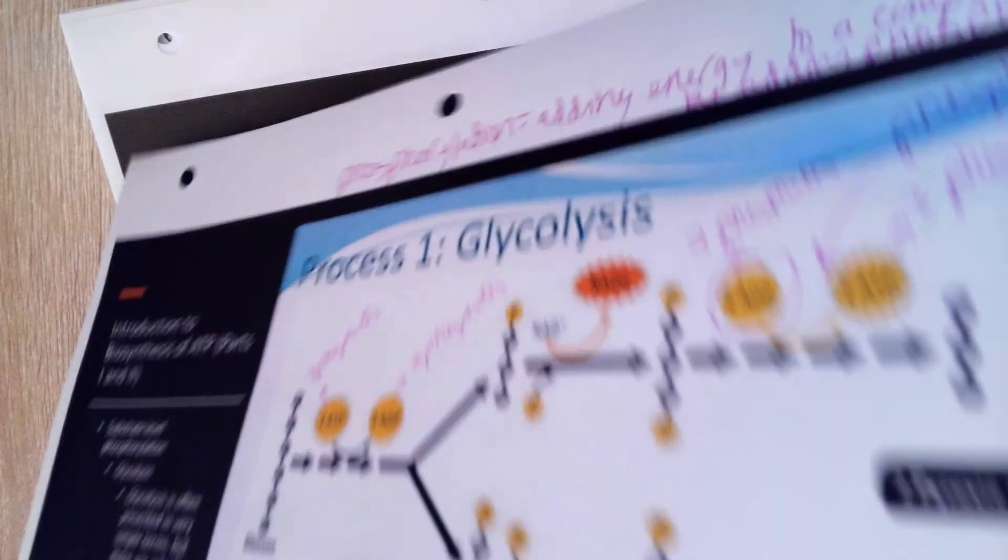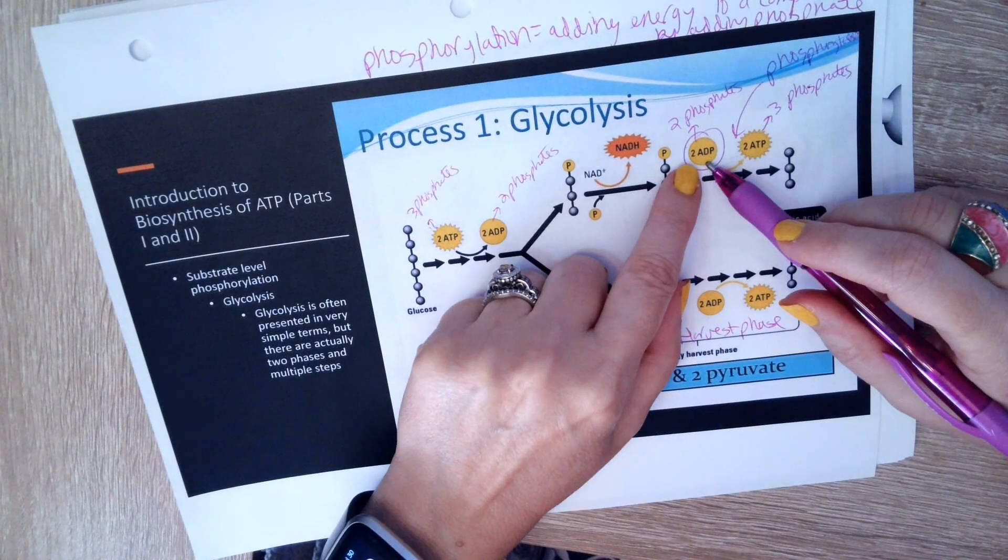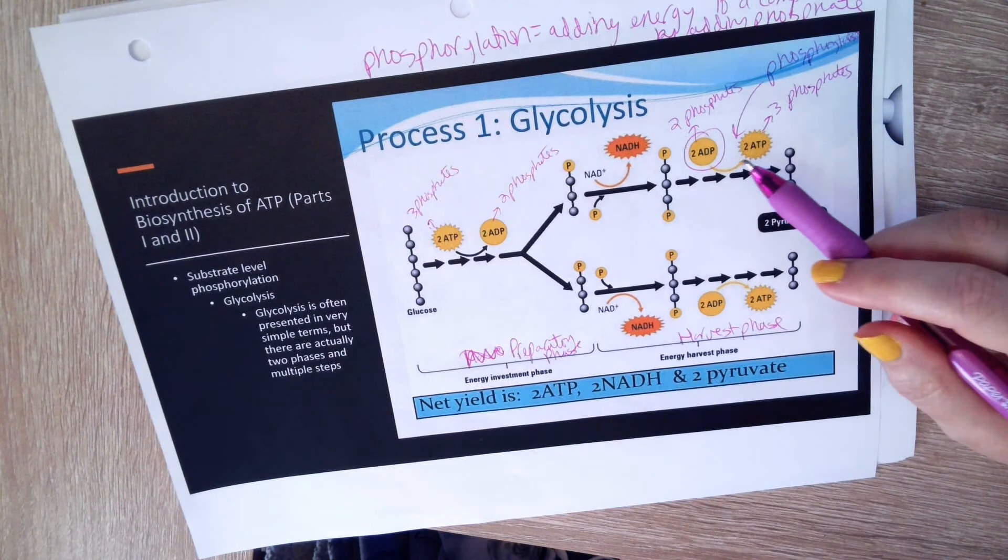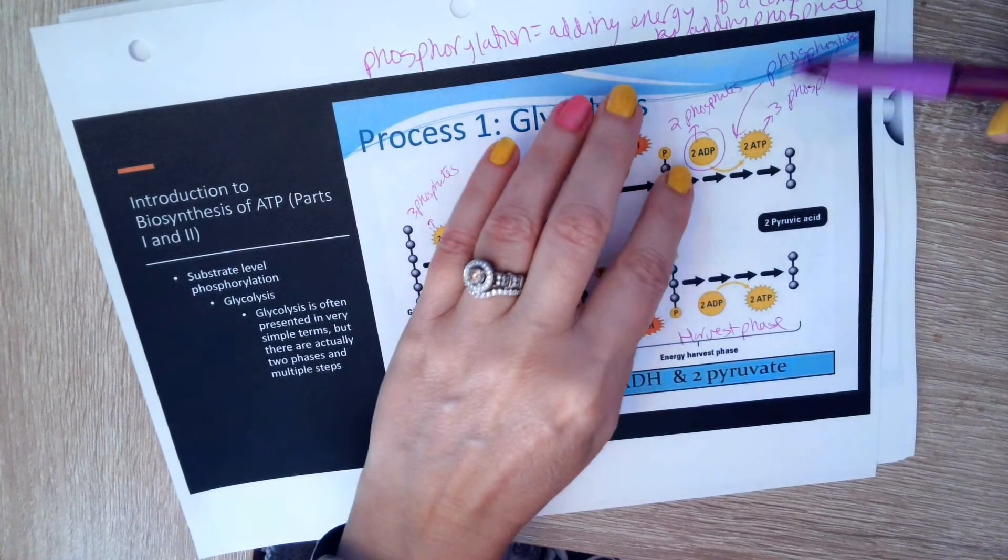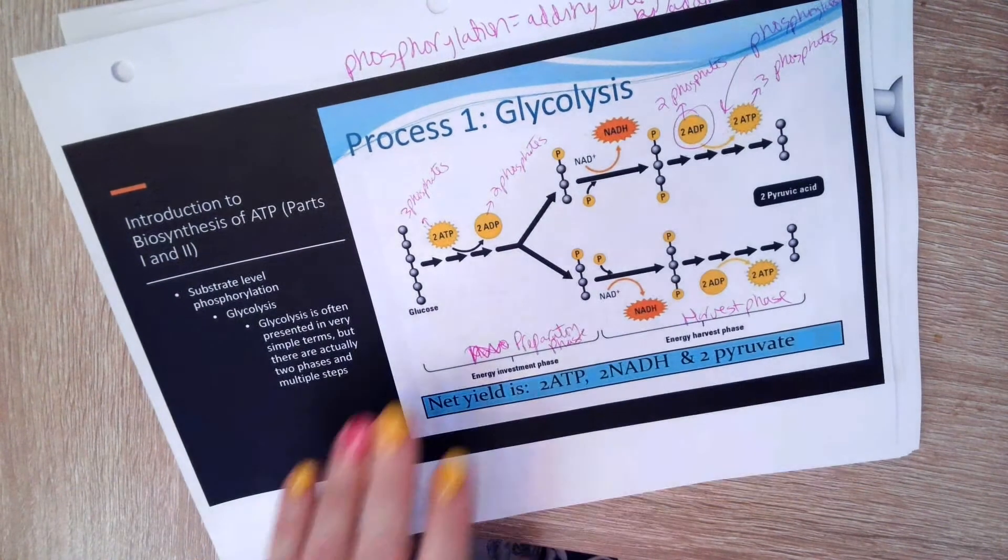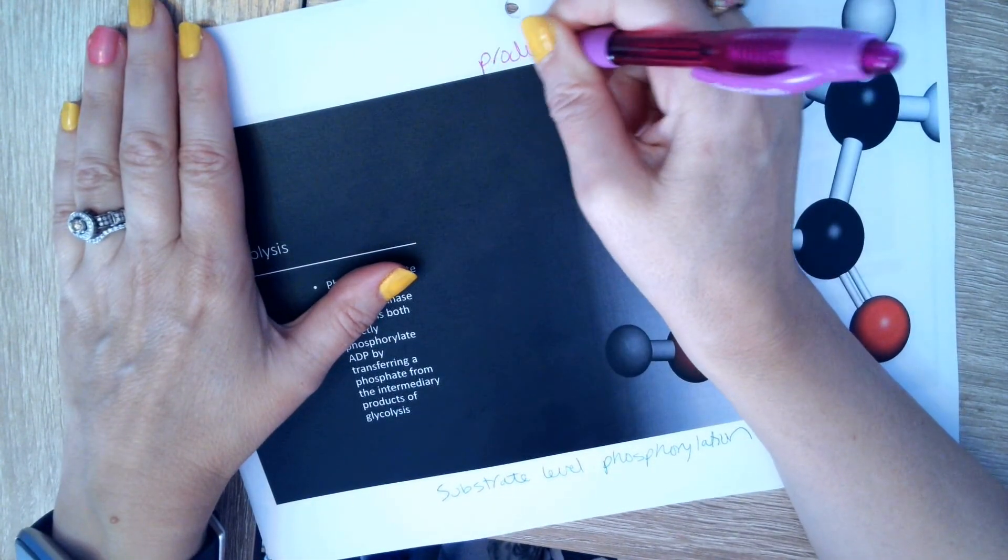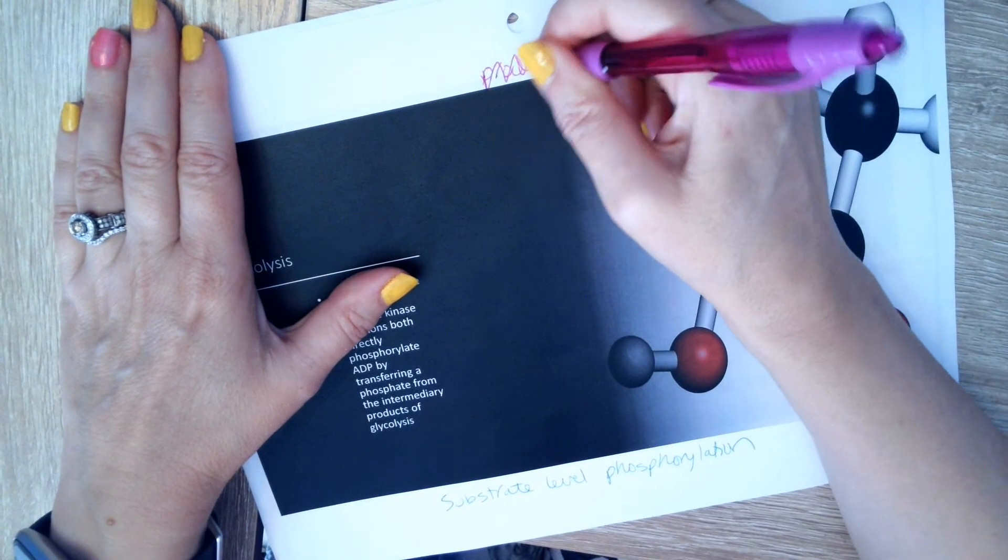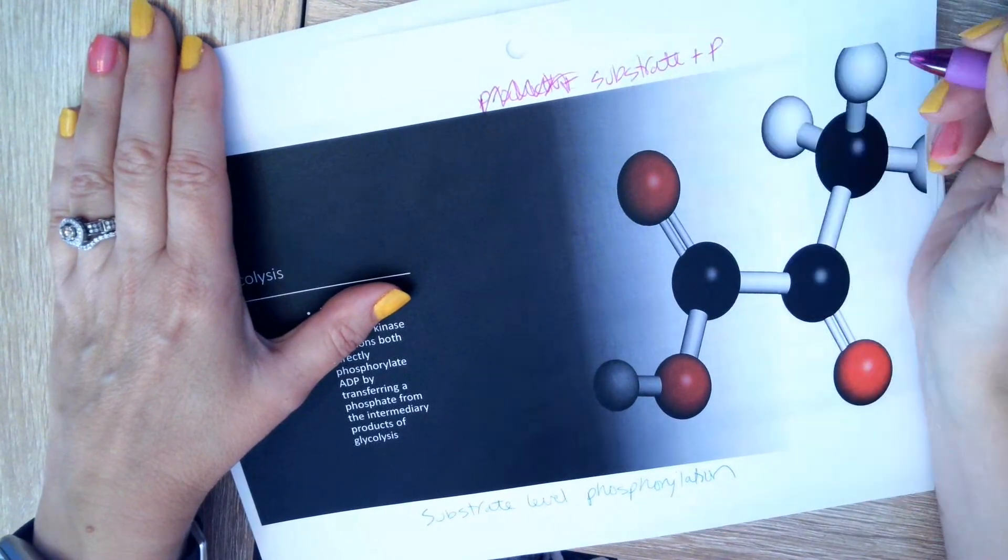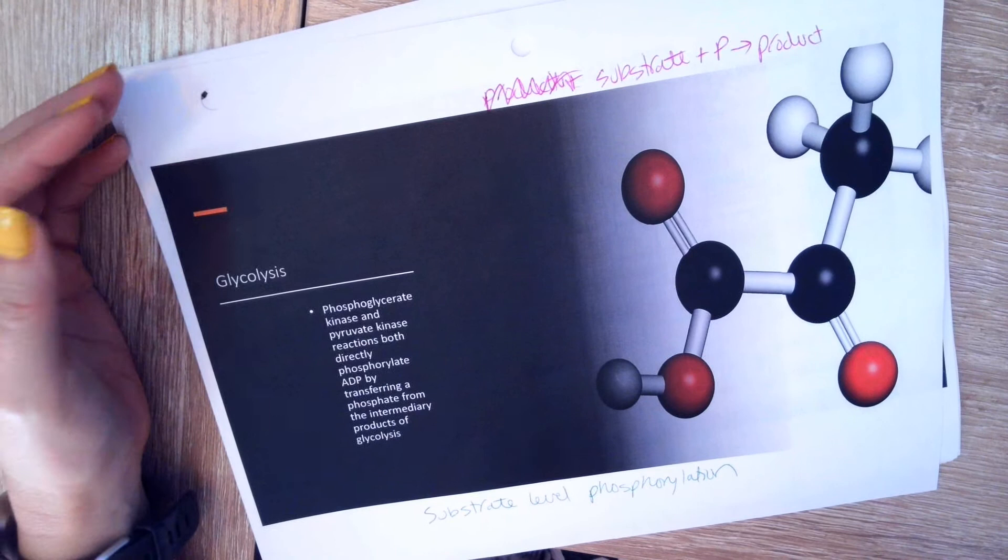So what we're seeing here is the phosphorylation happening directly to the ADP. We're not really doing a big chemical reaction like an oxidation-reduction reaction here, which we're going to talk about oxidation reactions in a few minutes, but we're just literally adding a phosphate to the ADP so that we can make ATP. And that is called substrate-level phosphorylation, because we're just taking a substrate plus phosphate and we're going to get our product that has the phosphate on it. It has energy.